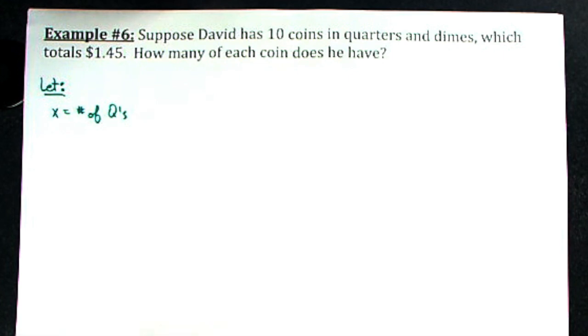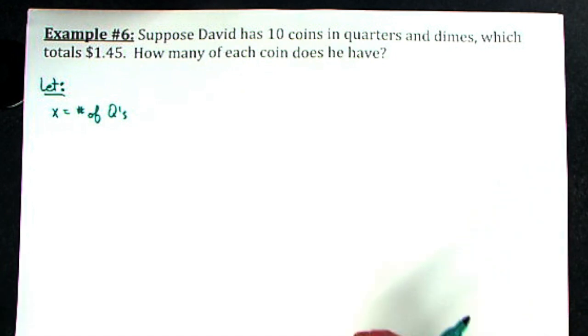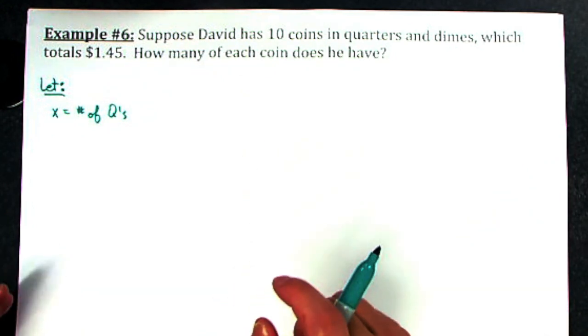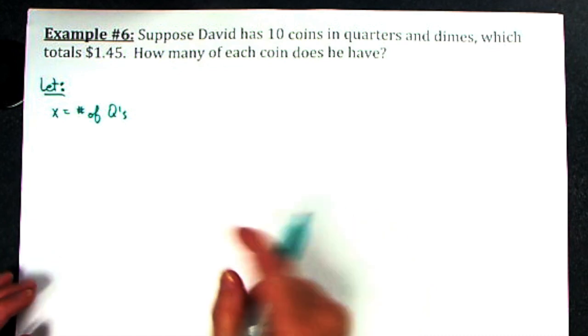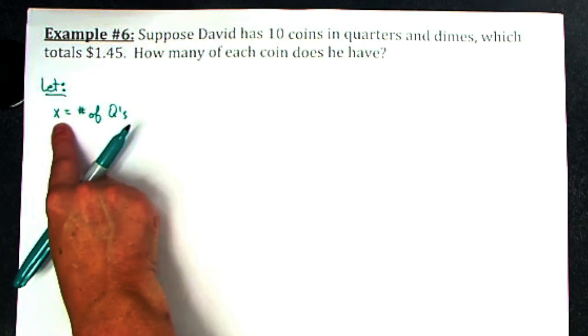Now I have to write something algebraic to represent dimes. I can't use a y, but I have to use something they've given me in the story problem. I know that this is x number of coins. If this is four coins, how many coins do I have to have in dimes?